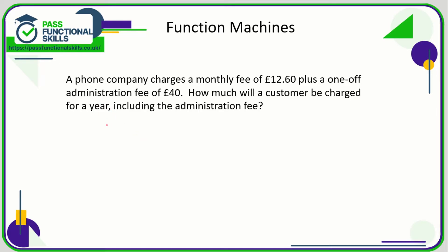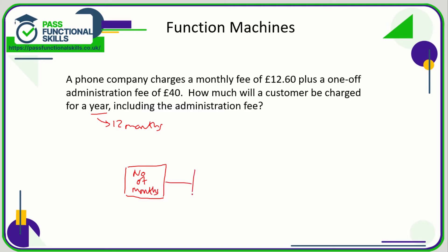Here's a worded question. A phone company charges a monthly fee of £12.60 plus a one-off admin fee of £40. How much will a customer be charged for a year, including the administration fee? A year is 12 months, so we input the number of months into our function machine, multiply by the monthly fee of £12.60, and then add on the admin fee of £40.